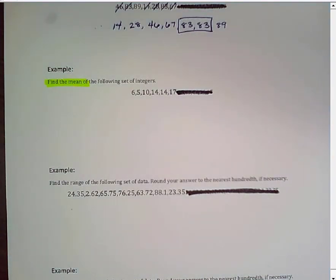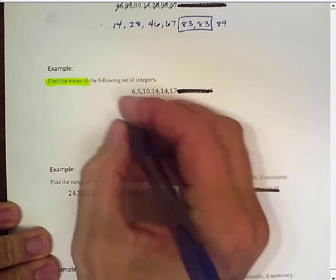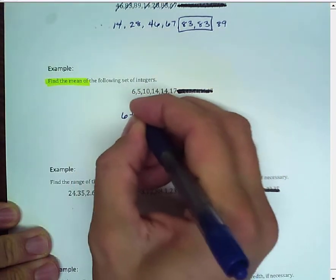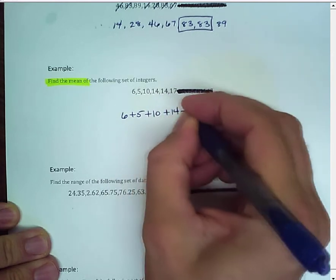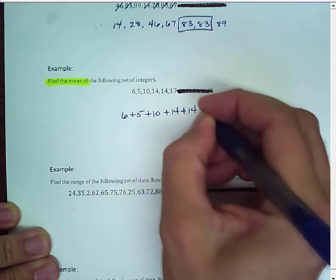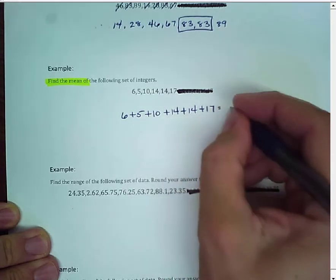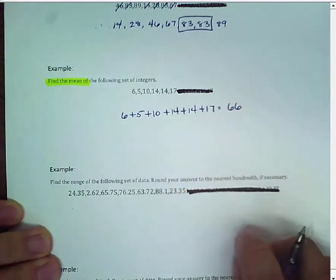So, 6 plus 5, plus 10, plus 14, plus 14, plus 17. Combining those, I'm going to get 66. So, 6 plus 5, plus 10, plus 14, plus 14, plus 17. Adding those together is going to give me the number 66.